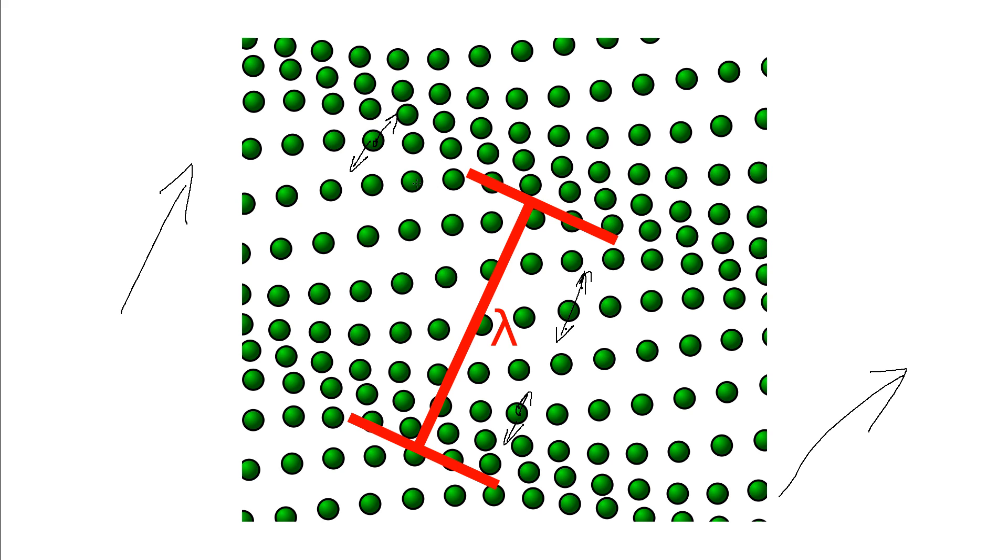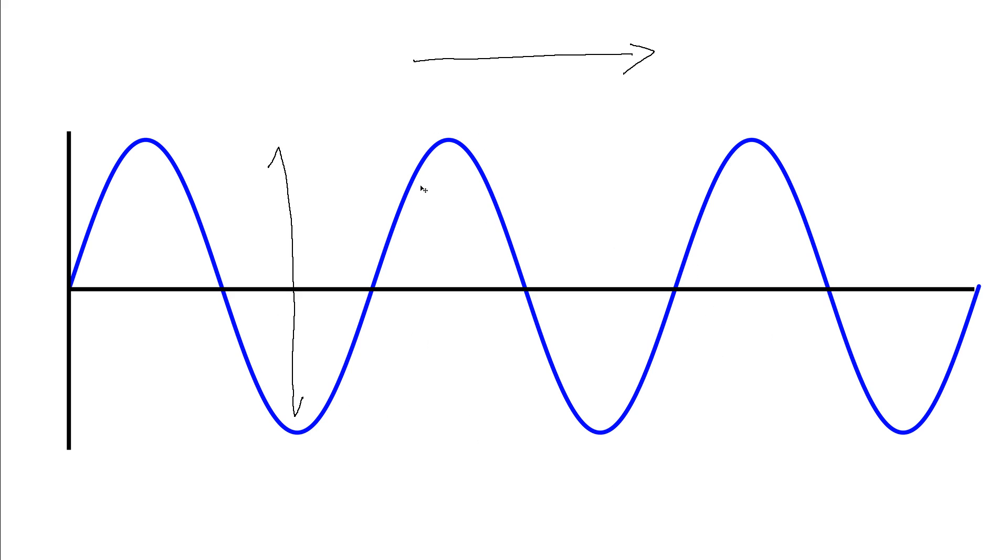In a longitudinal wave these are perpendicular. So we have the direction of oscillation, the direction of displacement is perpendicular, so at right angles at 90 degrees to the direction that the wave is actually moving.